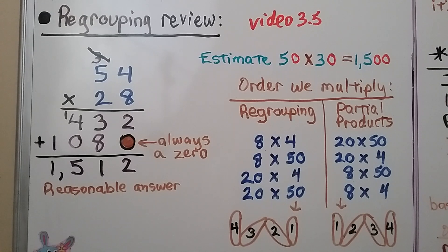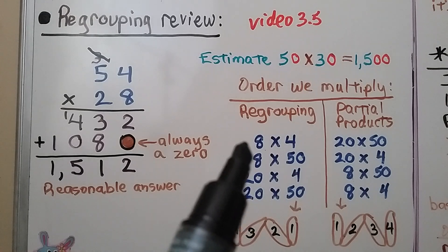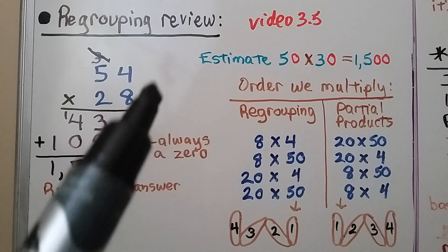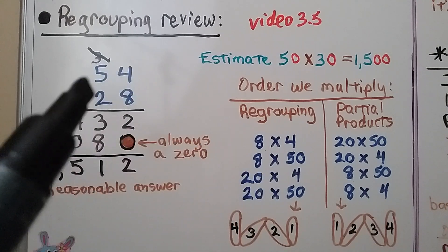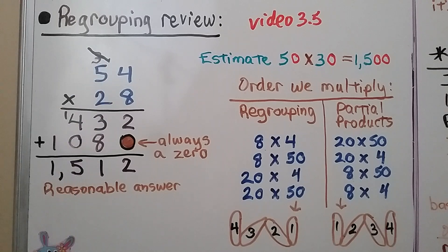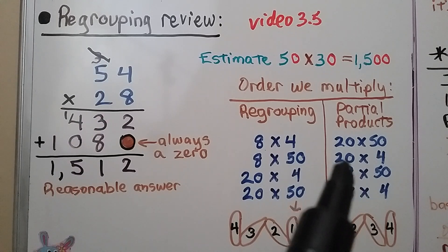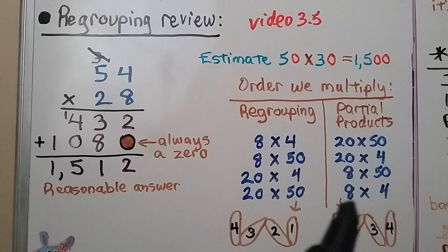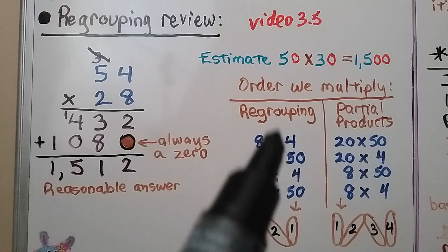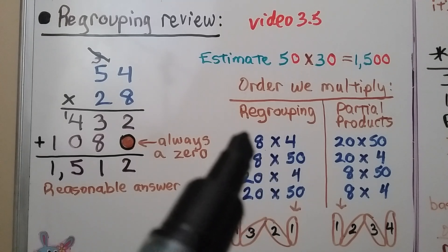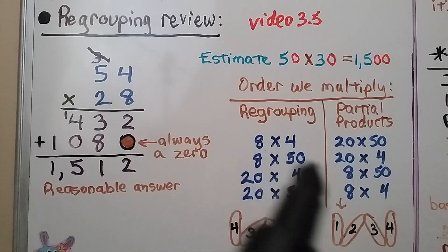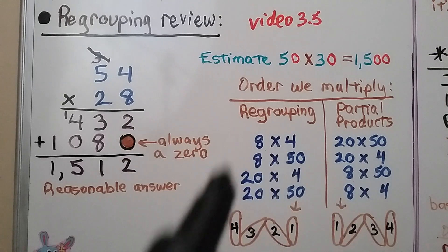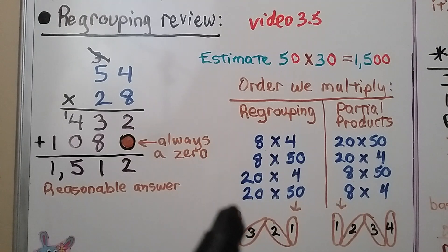When using regrouping, the order we multiply is: ones first (8 times 4 = 32), then 8 times 50, then 20 times 4, then 20 times 50. With partial products, we started with 20 times 50 and ended with 8 times 4 — completely opposite. Regrouping starts with the ones and ends with the tens; partial products starts with the tens and ends with the ones.